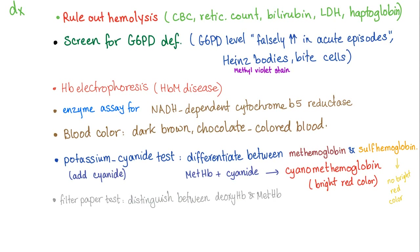How to diagnose methemoglobinemia? First, rule out other causes of hemolysis by ordering complete blood count, reticulocyte count, bilirubin, LDH, and haptoglobin to rule out hemolytic anemia. Screen for G6PD deficiency.